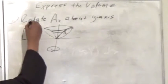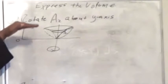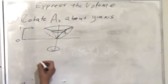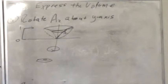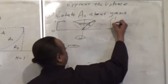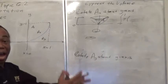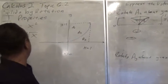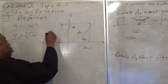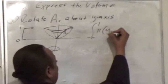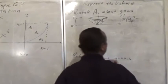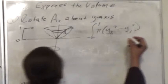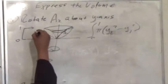We'll be slicing from 0 to 1 — that's where we'll start our slices. So from 0 to 1, pi. Now we're going to do the outer, which is the blue one right here — that's the outer — and let's rewrite that as x to the one-third power. So y2 squared, and the inner will be the red one, which is y1 squared. Our deltas will come from the slices here, and they'll be delta y's.